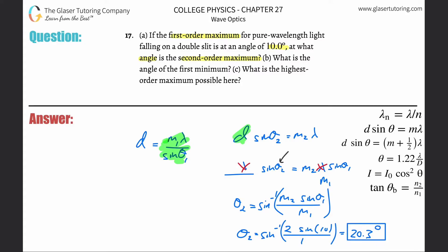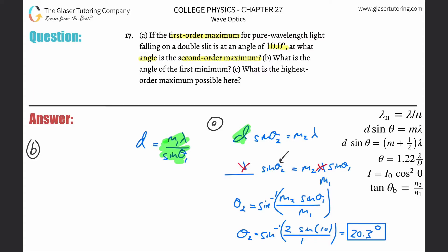That's the answer to letter A. Now letter B asks: what is the angle of the first minimum? For minimums we use the destructive interference formula: d·sinθ = (m + 1/2)·λ. One thing to note — the first minimum occurs at m = 0 with this formula, not m = 1, so you have to be careful.